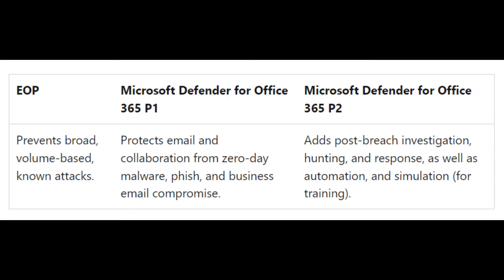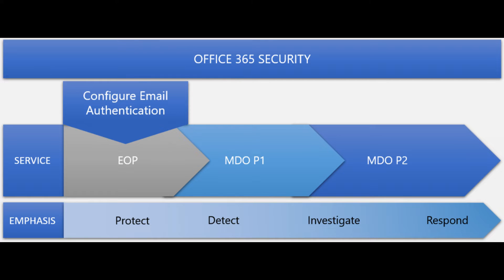The core of Office 365 Security is Exchange Online Protection. Microsoft Defender for Office 365 Plan 1 contains EOP within it, and Plan 2 contains both Plan 1 and EOP. The structure is cumulative, so when configuring these products, you should start with EOP and then work up to Defender for Office 365 Plan 2.